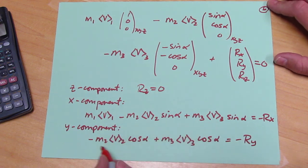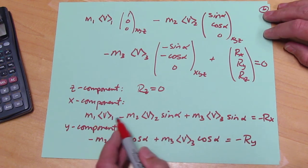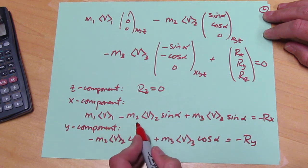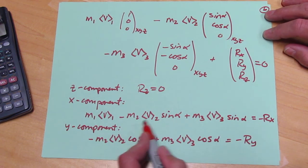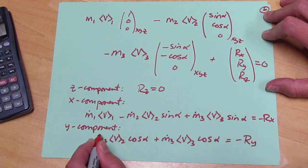Now this is actually not enough information to solve the problem. We need to know the ratio of the two streams, M2 and M3. We know that M2 plus M3 adds up to M1, but we don't know the split.